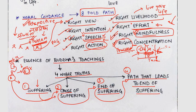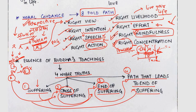For example, a student who could not clear his exam first accepts his suffering. Second, he identifies the cause — distractions from social media. Third, he recognizes there is an end to the suffering. Fourth, he devises the path by deactivating social media apps. This is how to apply the Four Noble Truths: accept the suffering, do not resist it.